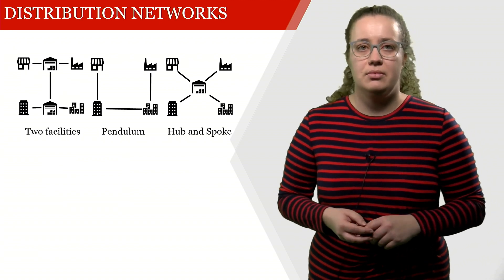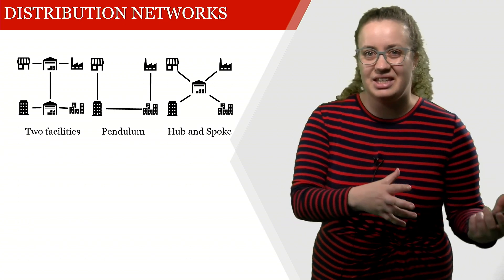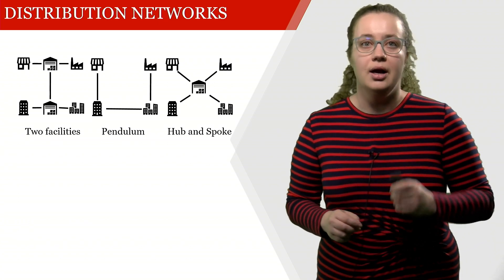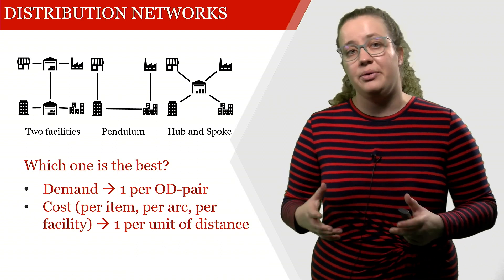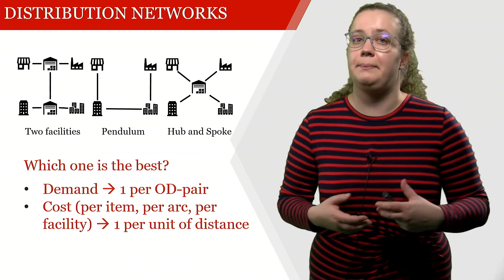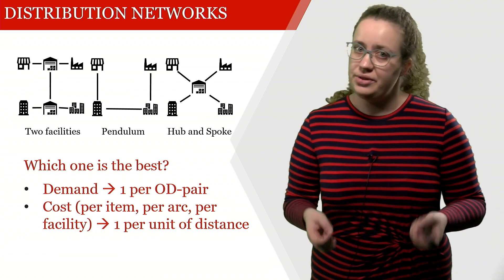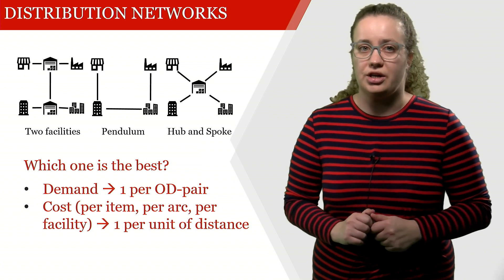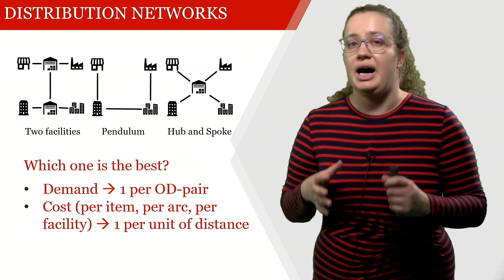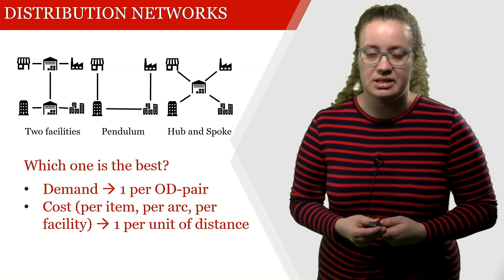Now we've seen that the hub and spoke network performs best against the two networks that we looked at so far. But now the question is how does it perform against the two facilities case or the pendulum case? What I would like you to do is for the same demand and cost structure, determine how expensive the hub and spoke, the pendulum, and the two facilities cases are.